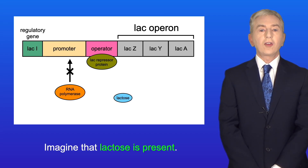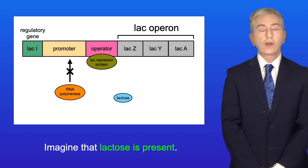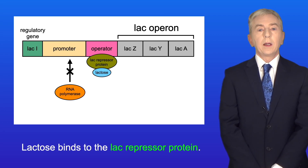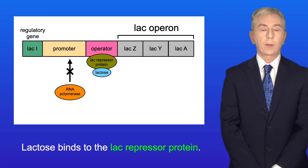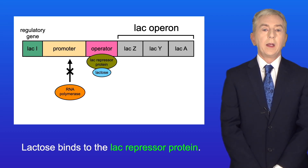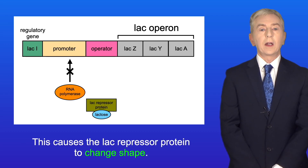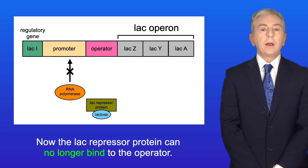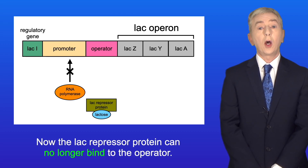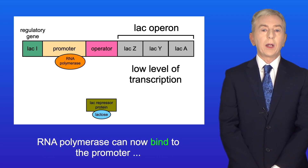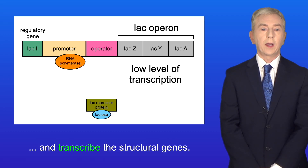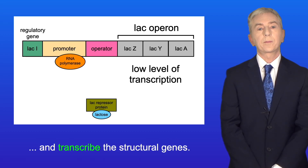Now imagine that lactose is present. Lactose binds to the lac repressor protein, causing it to change shape. The lac repressor protein can no longer bind to the operator, so RNA polymerase can now bind to the promoter and transcribe the structural genes.